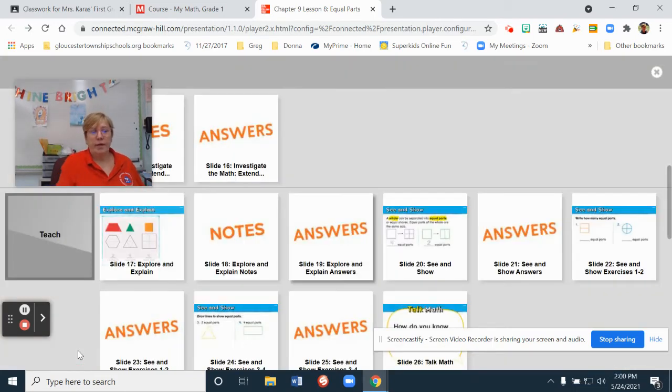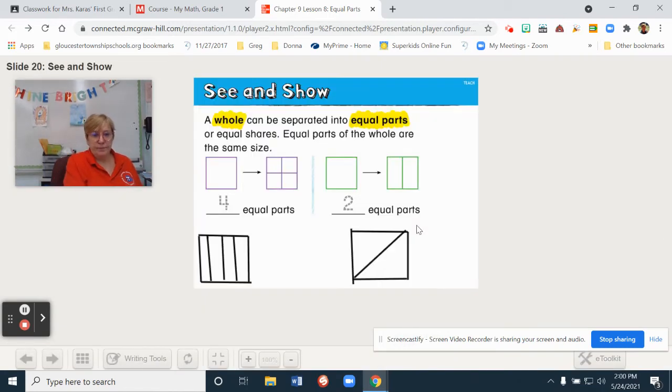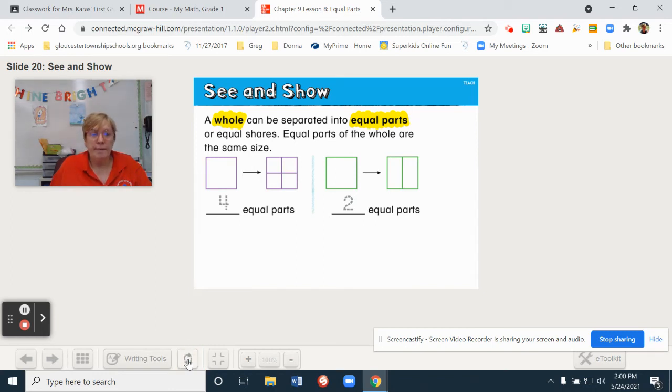Let's look at the see and show. A whole can be separated into equal parts or equal shares. Equal parts of the whole are the same size. So, here, they have it divided like this. Now, this, I know it's not equal. But if you were to try to cut something or fold something that's a square into equal parts, this is another way. Not as easily done as the squares are, but this could also be, if you took the time to measure, another way to do equal shares. And the same thing with this square. And again, I know they're not equal because I just drew them with the drawing tool. But that's to show that equal parts can look differently. So, equal parts of the whole are the same size. So, here they go. Right here. Four and two.